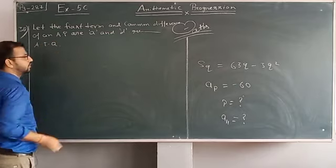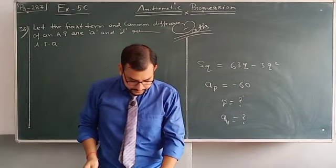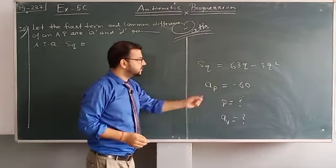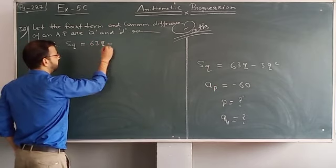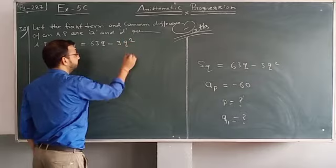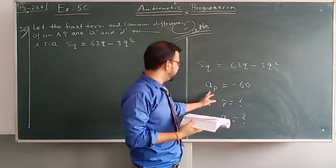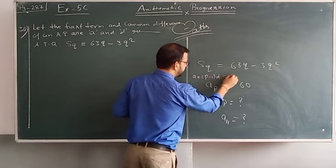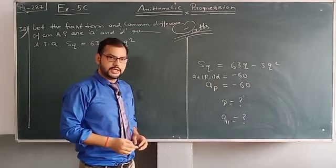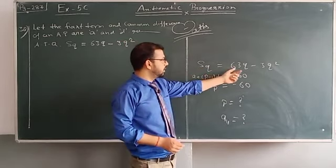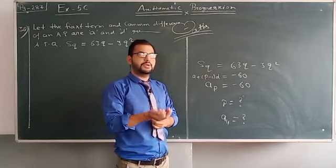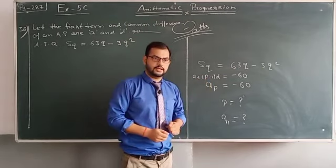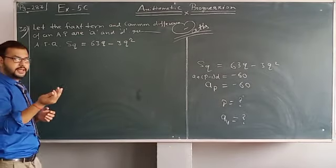According to the question, the sum of Q terms is given: SQ = 63Q minus 3Q squared. The question is asking for P. If we talk about AP, then AP = A plus P minus 1 into D equals minus 60. If we keep 1, 2, 3, then we can find terms. If we find terms, the value of A and D will come, then the value of P will come. Now we have another pattern, let's teach the second pattern.